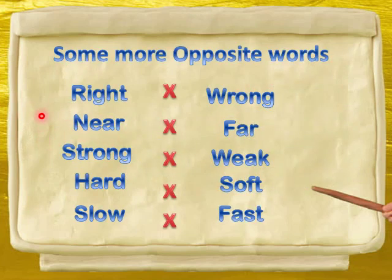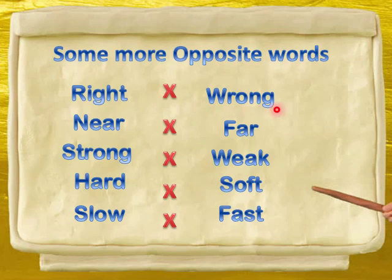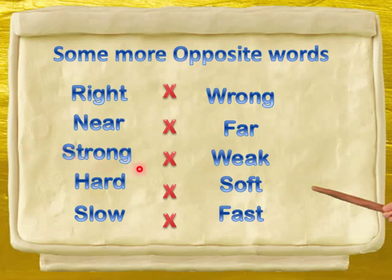चलिए कुछ और opposite words learn करते हैं. ये क्या है? Right. और ये क्या है? Wrong. कोई चीज right भी हो सकती है और कोई wrong भी हो सकती है. Near. और near का opposite होता है far. मतलब ये पास है और ये है दूर. Strong. और strong का opposite होता है weak, यानि कमजोर. और ये है ताकतवर और ये है कमजोर.